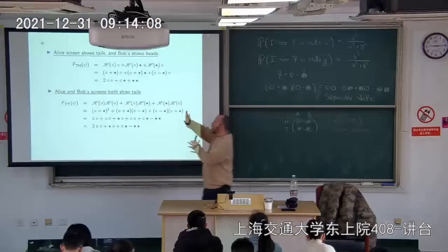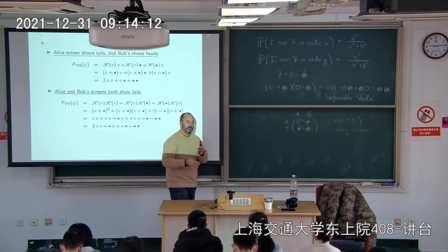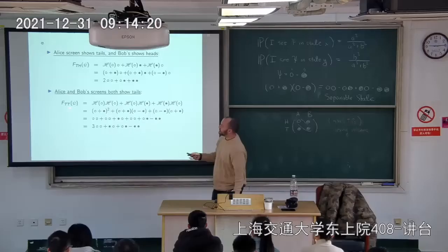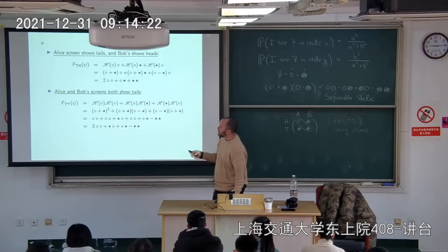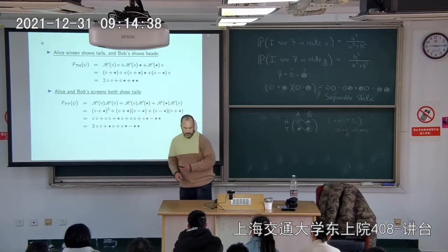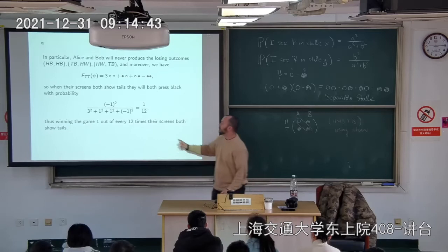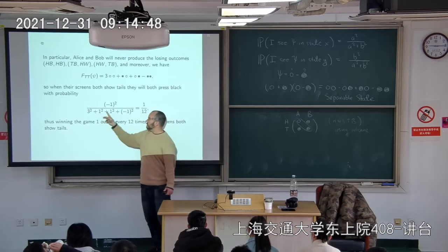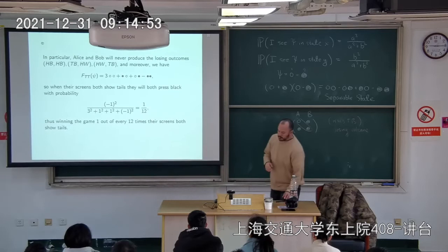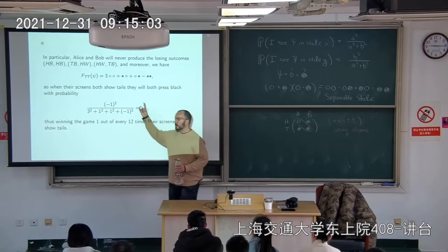What quantum computing basically is, is choreographing these cancellations so that you get outcomes a classical computer can never achieve. For tails-tails, there are no losing outcomes — they win by pressing black-black, which happens 1/12 of the time (probability = (−1)²/(3²+1²+1²+1²+1²) = 1/12). Alice and Bob keep playing and never hit a losing outcome — they've 'broken the casino' using their quantum computer.